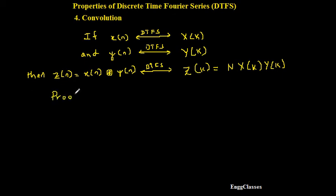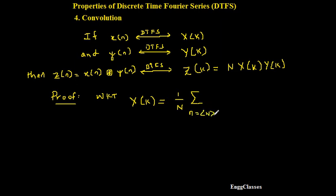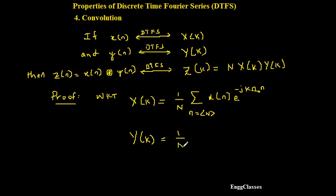For the proof, we know that the DTFS expression X of k is equal to (1/N) summation over range N of x of n times e to the power minus j·k·ω₀·n. Similarly, Y of k is equal to (1/N) summation over range N of y of n times e to the power minus j·k·ω₀·n.